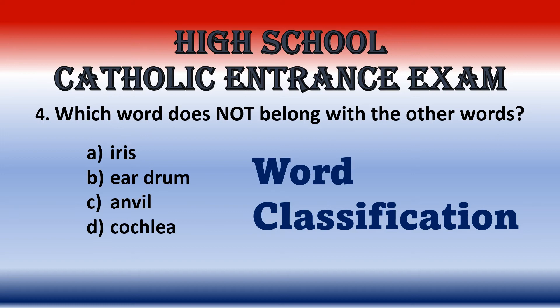Number four: which word does not belong? Iris, eardrum, anvil, cochlea. Where's your iris? In your eye. The eardrum, anvil, and cochlea are all parts of the ear. The anvil is a little part that holds everything together, and the cochlea is also a part of the ear. So your answer is A, iris.